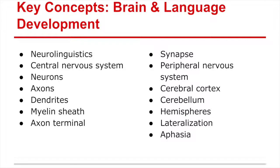A lot of the key concepts as we look at brain and language development come from the hierarchy of the brain — these are pieces in the chapter we need to define and understand. We need to know what happens as synapses fire and how they interact within different parts of the brain to make cognition happen, and especially language and literacy for this class. We should be adept at understanding what the parts are, the different elements, and how they interact.